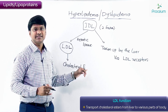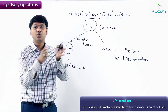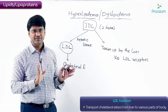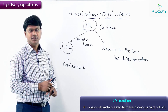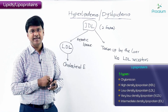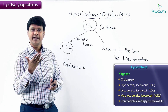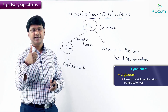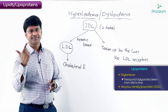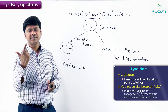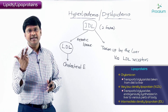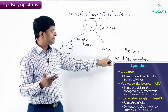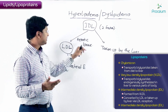LDL transports cholesterol esters from the liver to various parts of the body. There are mainly five types of lipoproteins: chylomicrons, HDL, LDL, VLDL, and IDL. Chylomicrons transport dietary triglycerides to the liver. VLDL transports endogenously synthesized triglycerides from the liver to various parts of the body. IDL is formed from VLDL and has two fates: it is either converted into LDL or taken up by the liver via LDL receptors.